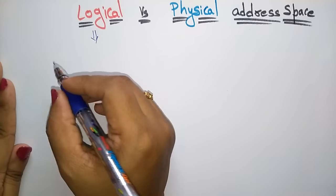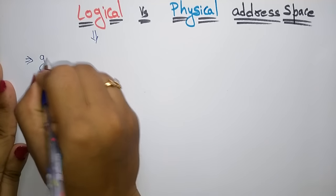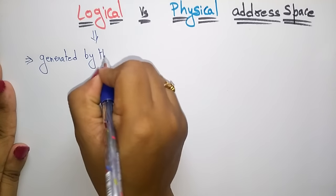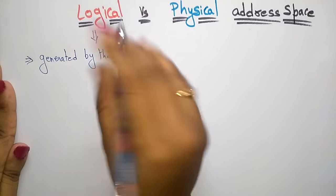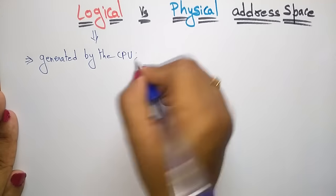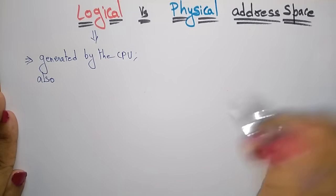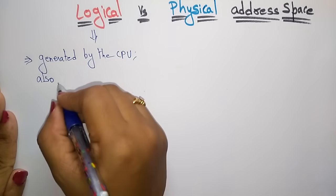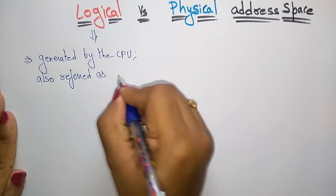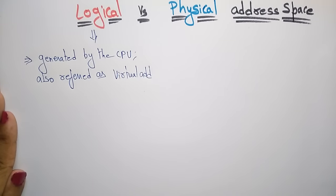Logical address space is generated by the CPU — this point you have to remember. Logical address space is always generated by the central processing unit. It is also referred to as virtual address space. Logical address space and virtual address space are both the same.